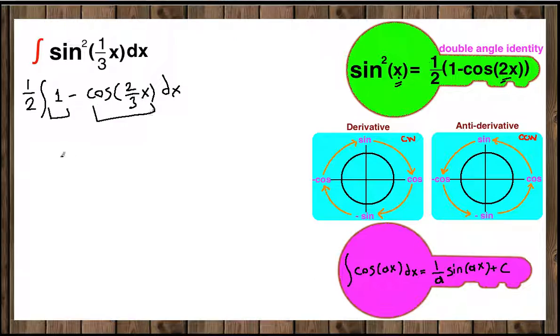Now we integrate each piece one by one. We have 1/2 in front. The antiderivative of 1 with respect to x is x, and we're going to integrate cos(2/3 x).